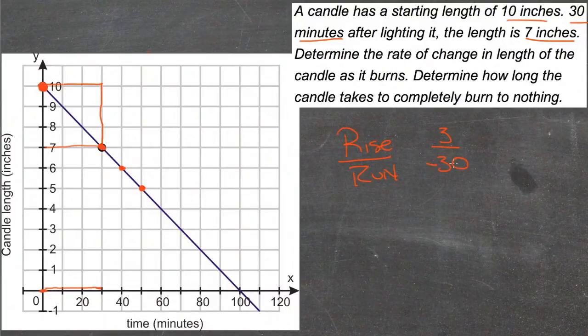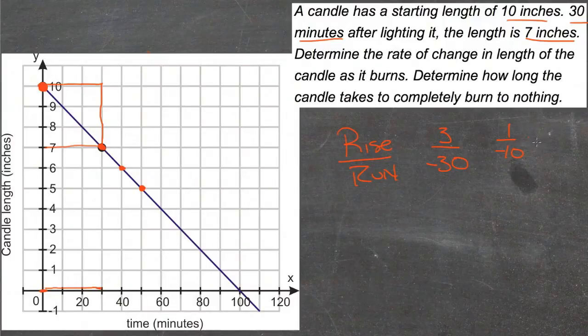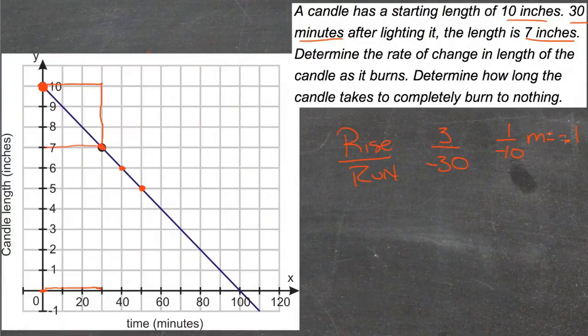We reduce that, 3 goes into 30, and we get 1 over negative 10, or if you like, we could say that m equals negative 0.1, negative 1 tenth. Either way is fine.